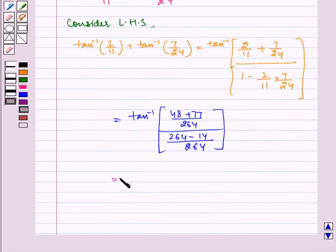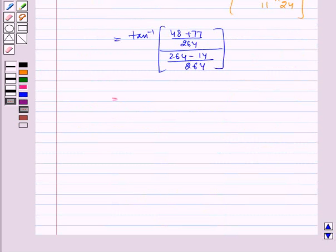Which is equal to tan inverse of 125 by 250. This gets cancelled by 2. So we get tan inverse of half.